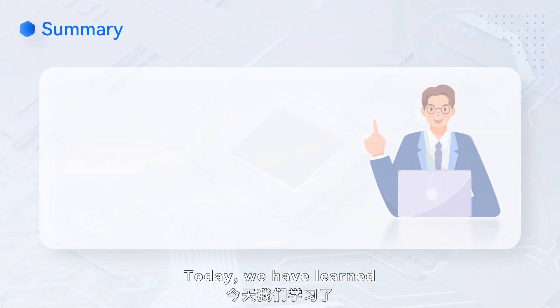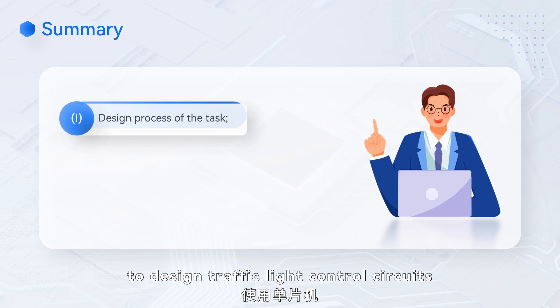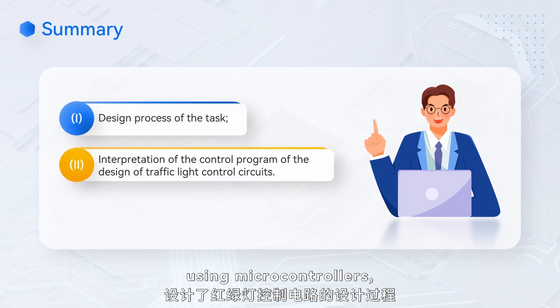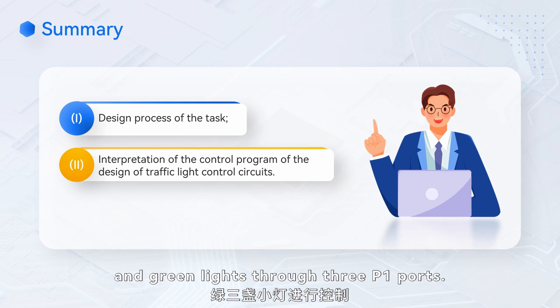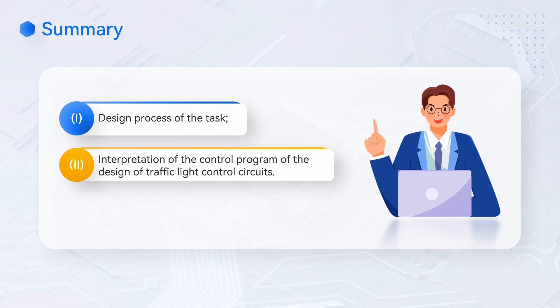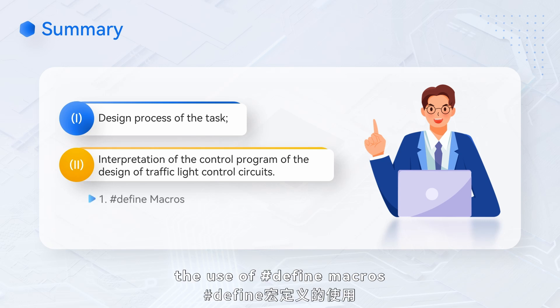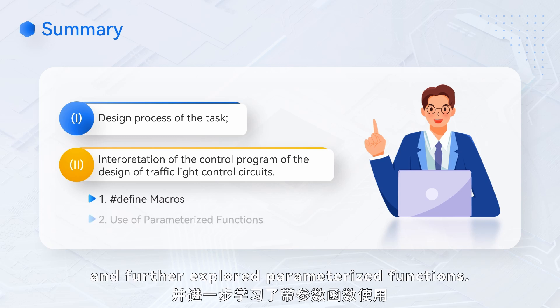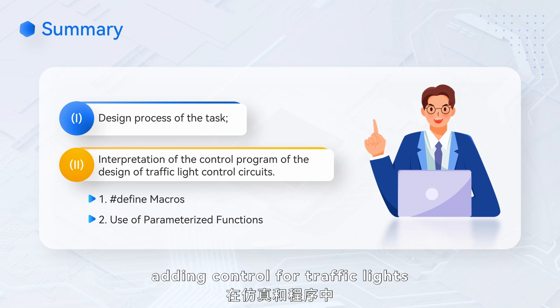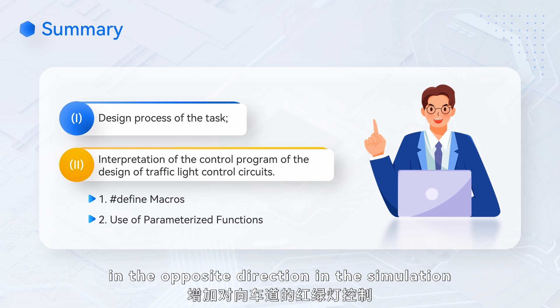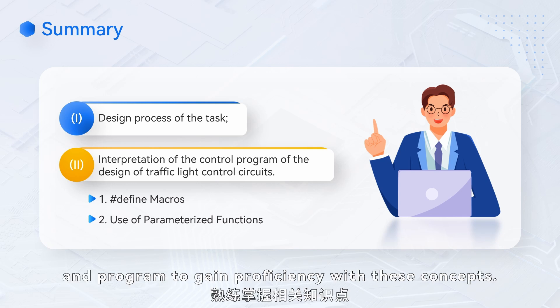Today, we have learned to design traffic light control circuits using microcontrollers, controlling the red, yellow, and green lights through 3 P1 ports. Through case analysis, we have also learned about the use of #define macros and further explored parameterized functions. After class, you may try adding control for traffic lights in the opposite direction in the simulation and program to gain proficiency with these concepts.